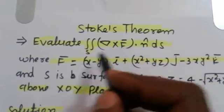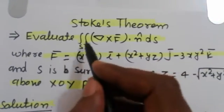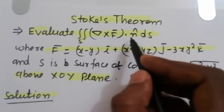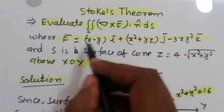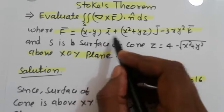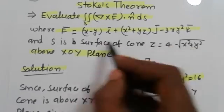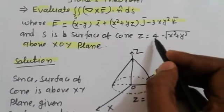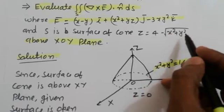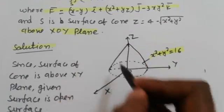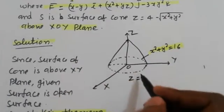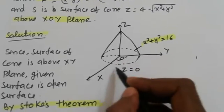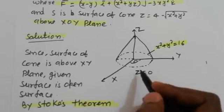Stokes' theorem is another problem. Evaluate double integral surface integral S of (∇×F)·n̂ dS where vector F is given. S is the surface of the cone z = 4 − √(x² + y²) above the xy-plane. Above the xy-plane means z is greater than 0, and in the xy-plane z equals 0.